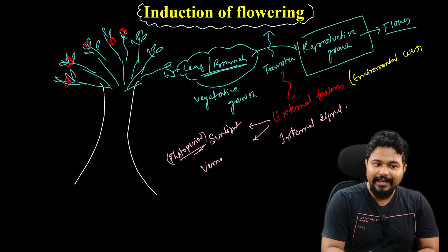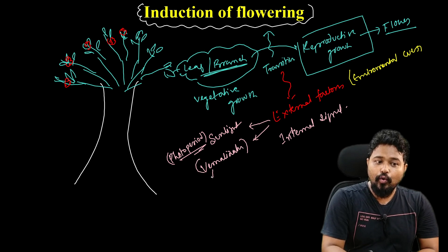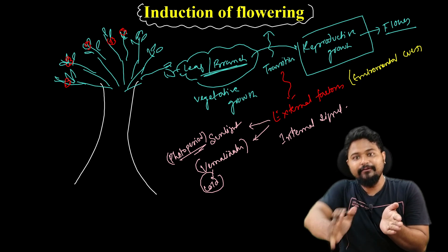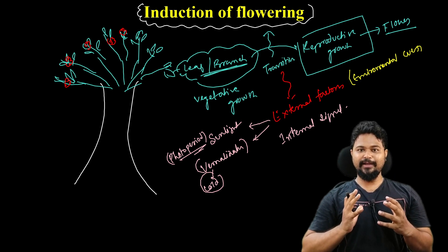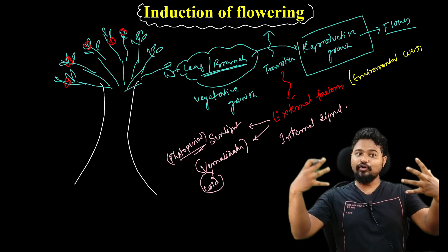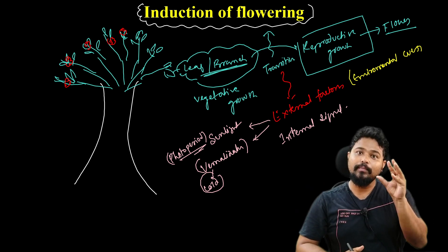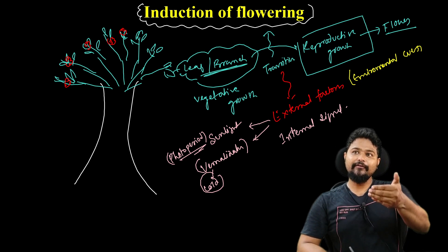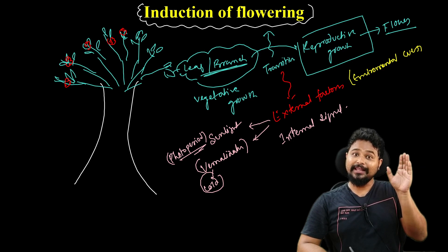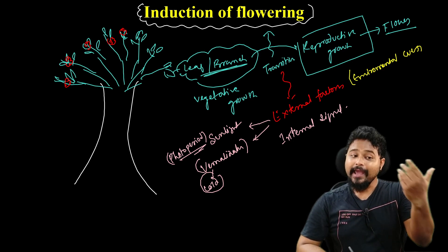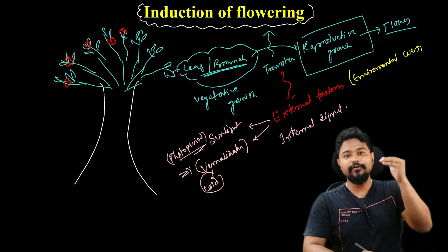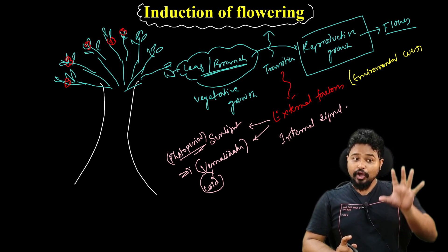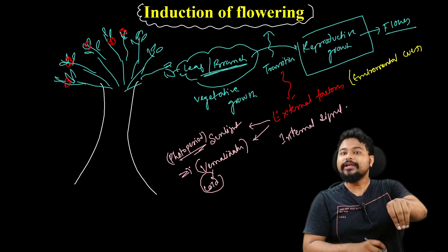Vernalization: some plants require exposure to cold temperature before they can flower. These are plants that need a cold treatment — a winter chilling — to initiate flowering. So vernalization is the process by which cold treatment induces flowering. These are external factors that control the flowering process.